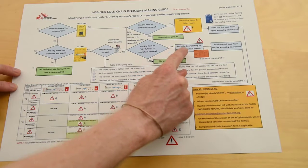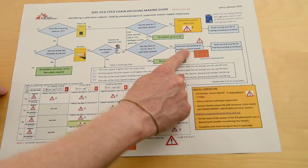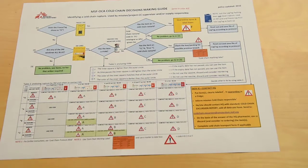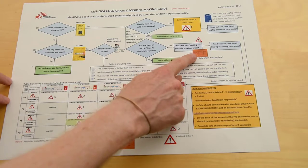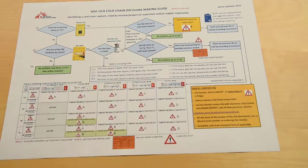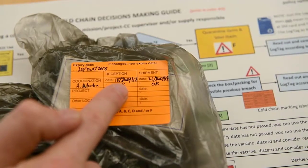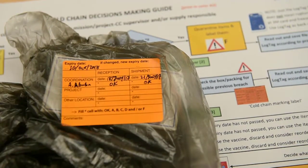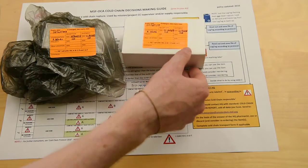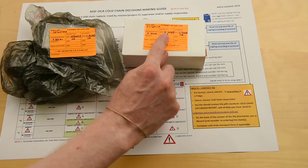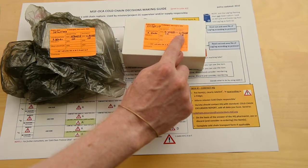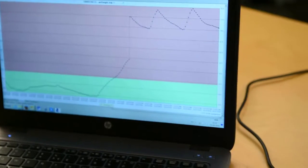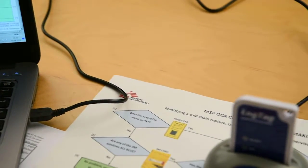Next we check the box or packaging for a possible previous breach by looking at the orange label if one is present. If this reception is being done at coordination there won't be an orange label on the items yet. We see from this orange cold chain label that this item was received initially in Addis Ababa on the 18th of July and was marked OK, and OK when it was shipped from there on the 21st of July. Similarly for the second item, we have OK marked on the reception at coordination and OK when they were preparing the shipment from coordination.